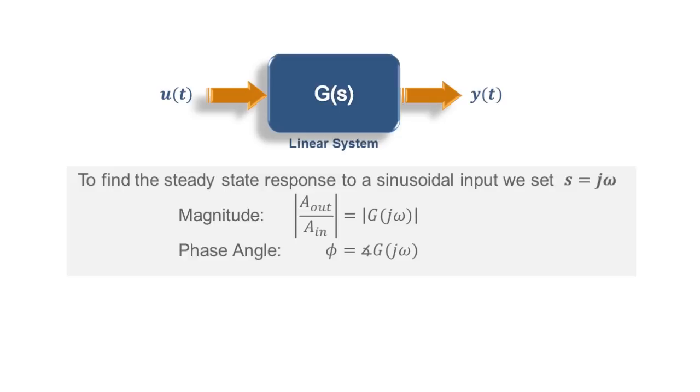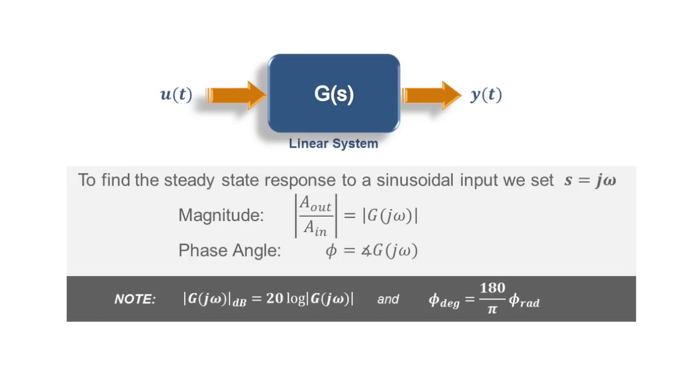As a quick note, frequency diagrams are normally drawn on logarithmic scales. The magnitude is usually displayed in decibels, which is defined as 20 times the log of the amplitude ratio, and the phase angle is usually displayed in degrees.